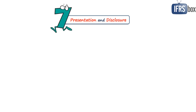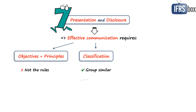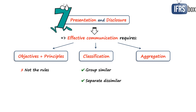Chapter 7 is about presentation and disclosure. Presentation and disclosure are communication tools, and making communication effective requires focusing on objectives and principles rather than rules. This involves classifying information so similar items are grouped and dissimilar ones are separated — the framework addresses offsetting, classification of equity, income and expenses and other items. Finally, it covers aggregating information while avoiding both too many unnecessary details and the opposite extreme of over-aggregation.